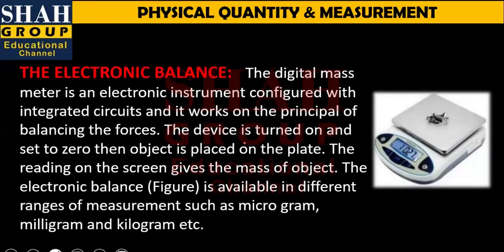To measure the mass of an object, we have an analog balance and we also have a digital balance, which we call an electronic balance. The electronic balance basically depends on different ICs (integrated circuits), and it works on the principle of balancing force.